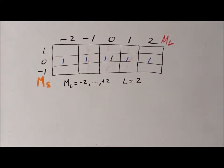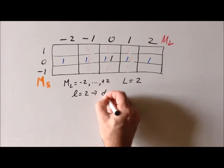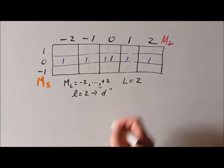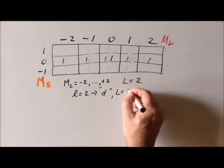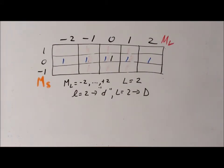We recognize that this combination of values corresponds to a big L value of two, because for small L equals two the small M sub L values go from minus L to plus L, which is minus two to plus two. We recall that for the small L case of small L equals two, we refer to this as a small d orbital. Exactly by analogy, when we have big L equals two we refer to this as a capital D. There is a strong correspondence between the one-electron atomic cases done with small Roman letters and the polyatomic cases where we use capital Roman letters. So we have a D state here.